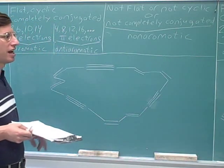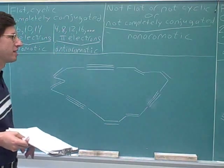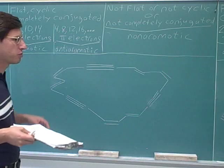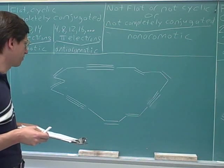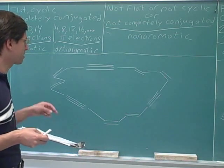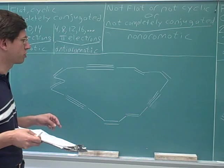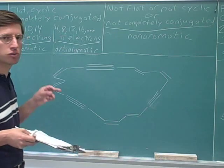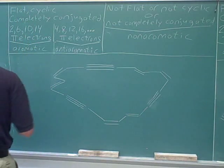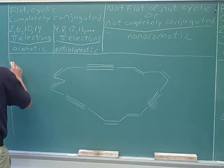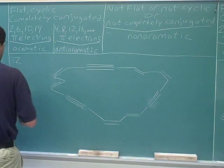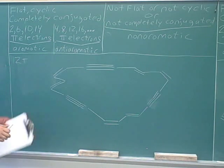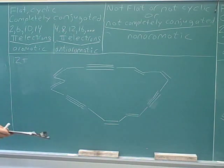Each of those double bonds has one pi bond with two pi electrons. So from the six double bonds we should be getting twelve pi electrons — twelve pi electrons from the double bonds.